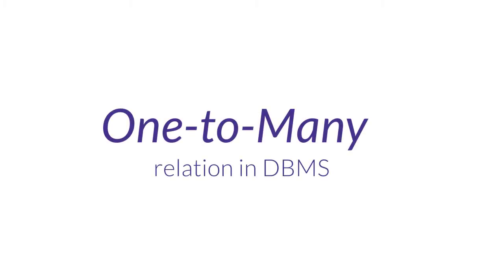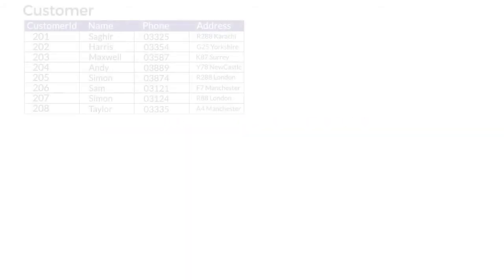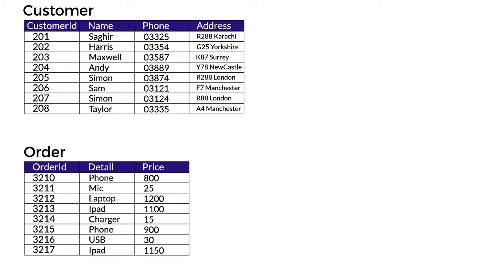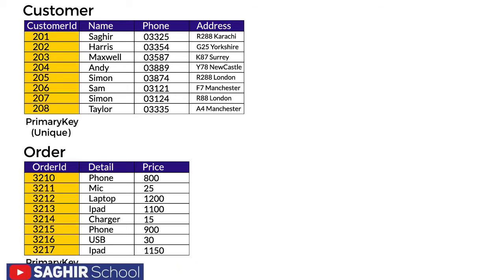One-to-many relation is the most widely used among the three relation types in a database system. An example is customer and order: one customer row can be linked to many orders, but one order row can only be linked to one customer. That's a one-to-many relation.